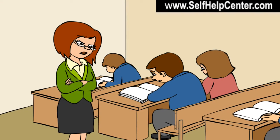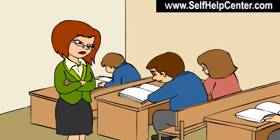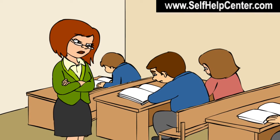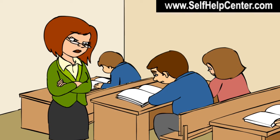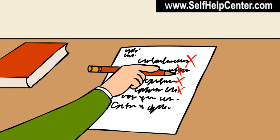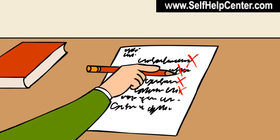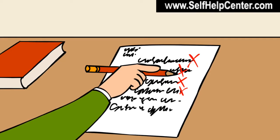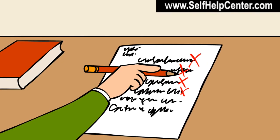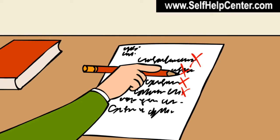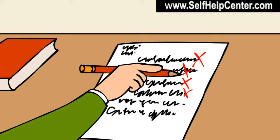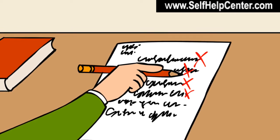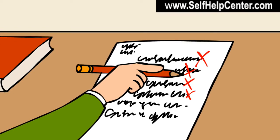Mrs. Thompson had watched Teddy the year before and noticed he didn't play well with the other children, that his clothes were unkempt and that he constantly needed a bath. Teddy was unpleasant. It got to the point during the first few months that she would actually take delight in marking his papers with a broad red pen, making bold X's and then marking the F at the top of the paper, biggest of all. Because Teddy was a sullen little boy, no one else seemed to enjoy him either.